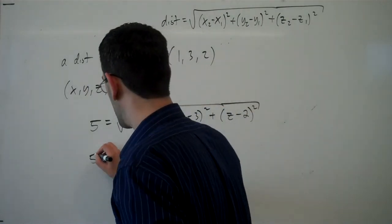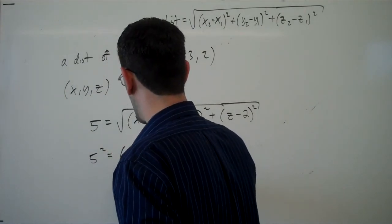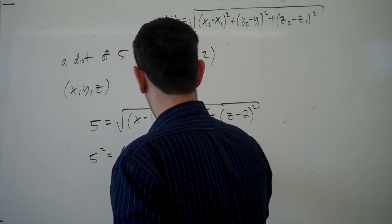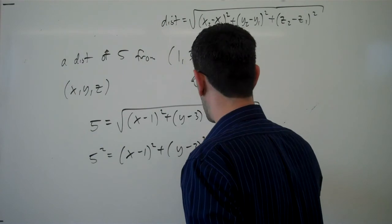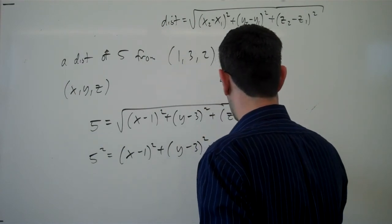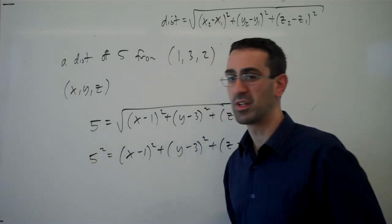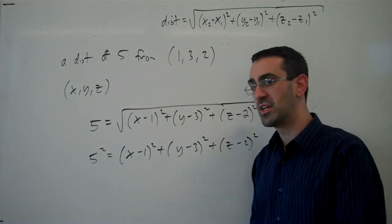Sometimes you may see this written instead, squaring both sides as x minus 1 squared, y minus 3 squared, and z minus 2 squared, equaling 25 or equaling 5 squared. That's the equation of a sphere.